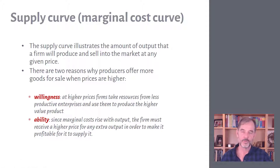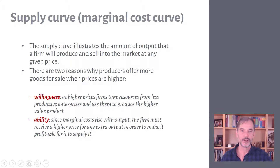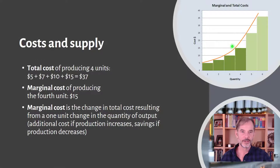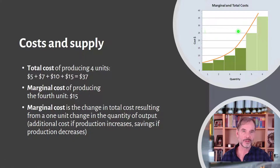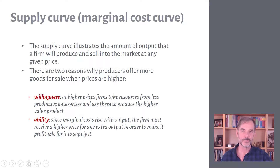The first reason firms supply more at higher prices is willingness, and the second is ability. At a higher price, the firm can cover additional marginal costs. If the price is $15, the firm can cover the cost of the fourth unit but not the fifth unit at $25. As the price rises past $25, the firm is willing to provide that fifth unit because it can now cover those costs.